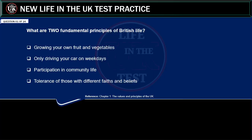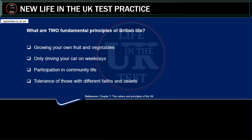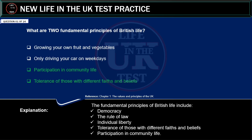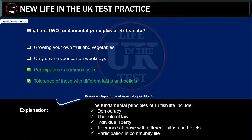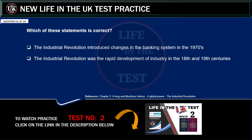Practice test number 12. What are two fundamental principles of British life? Growing your own fruit and vegetables. Only driving your car on weekdays. Participation in community life. Tolerance of those with different faiths and beliefs. Correct answer: tolerance of those with different faiths and beliefs, and participation in community life. The fundamental principles of British life include democracy, the rule of law, individual liberty, tolerance of those with different faiths and beliefs, and participation in community life.